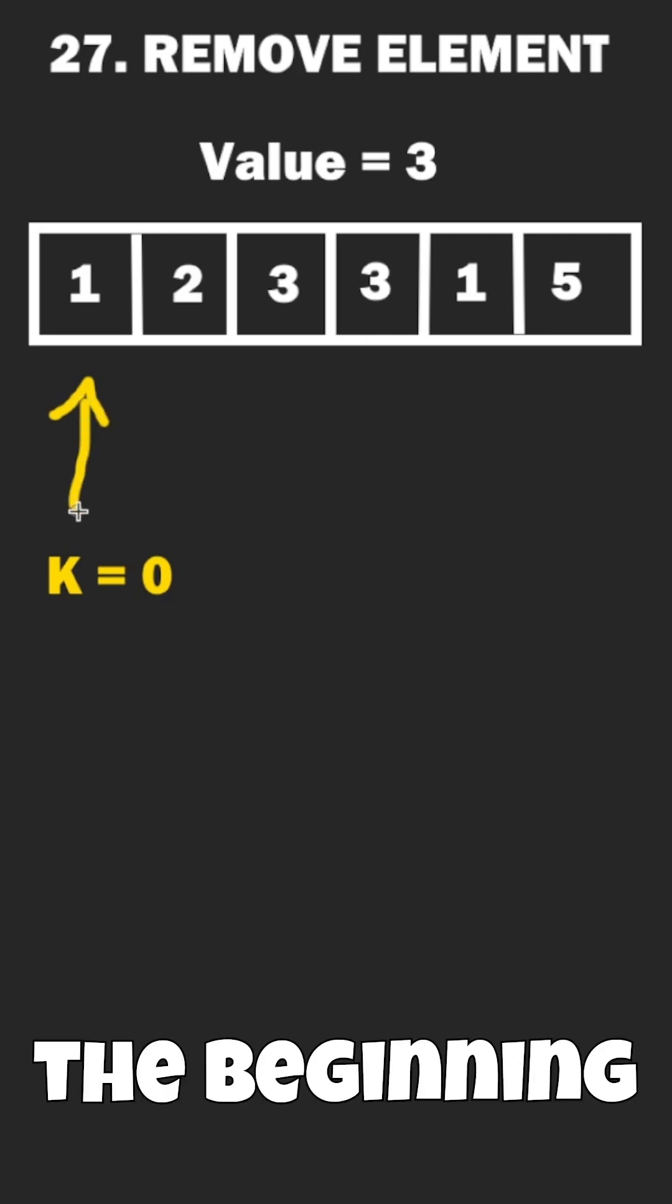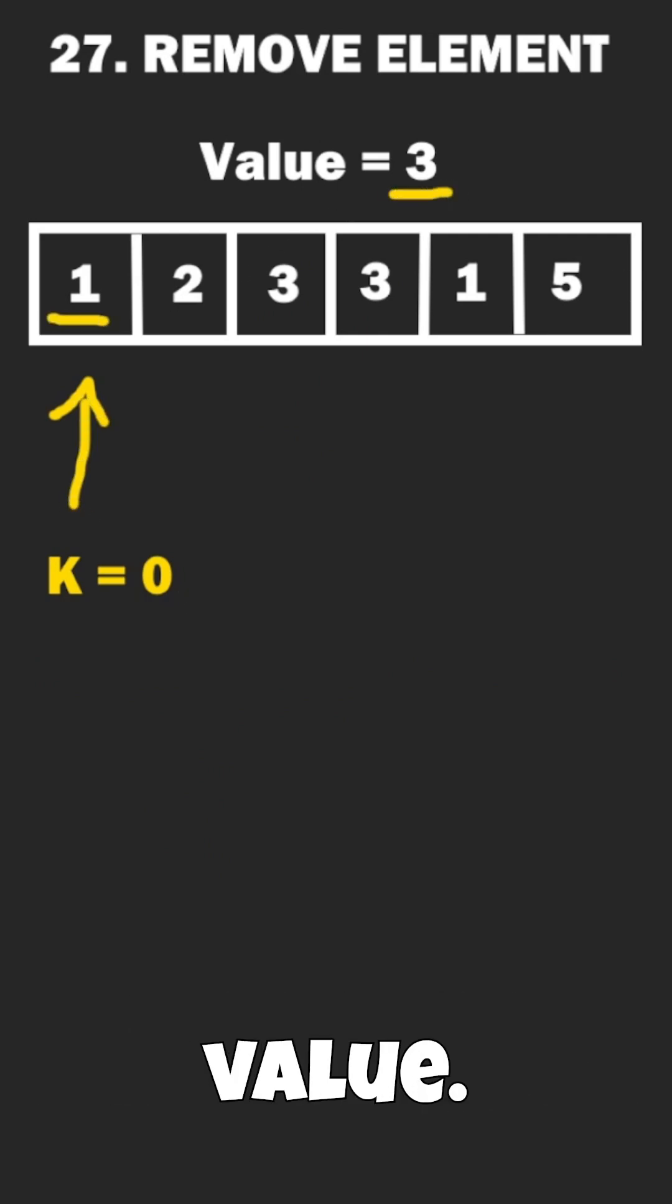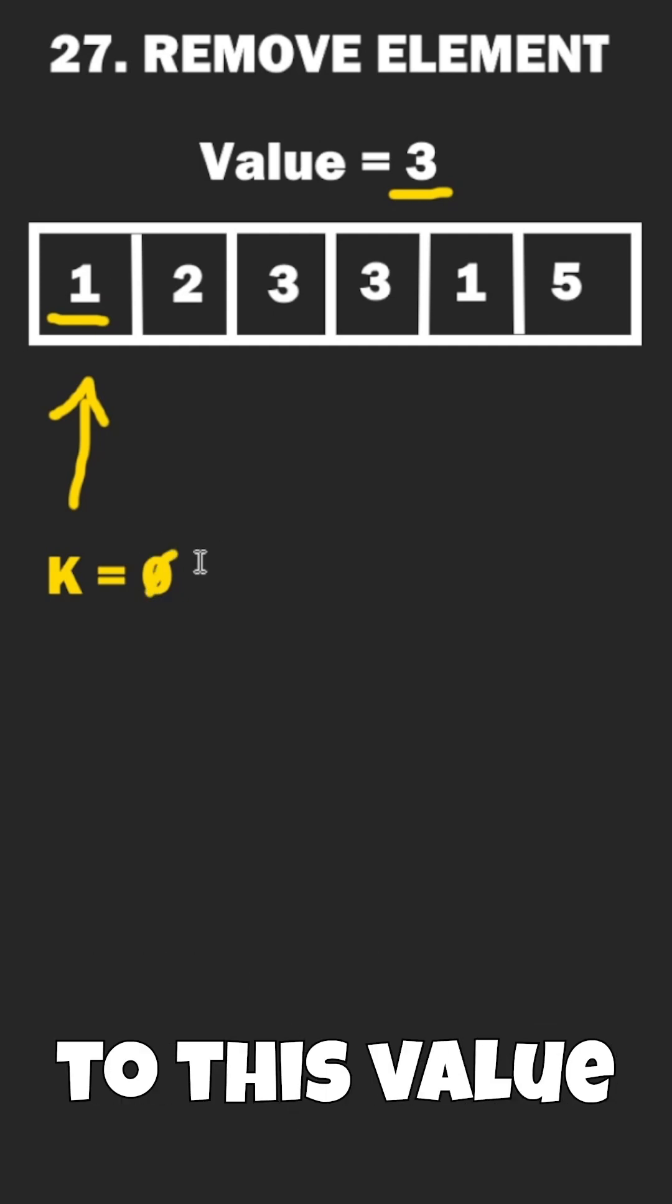Now we can start iterating from the beginning of the list. If the integer at the current index is not equal to value, we will set the element at the kth index to this value and increment k.